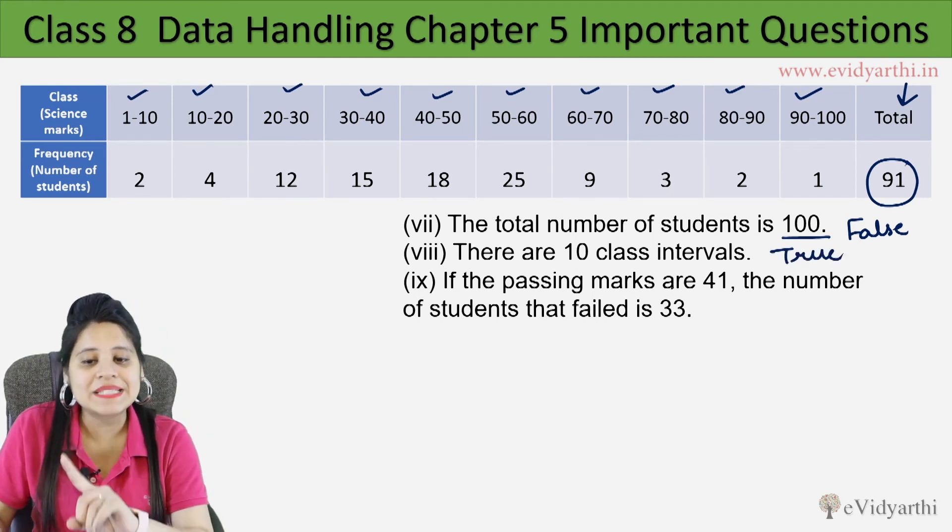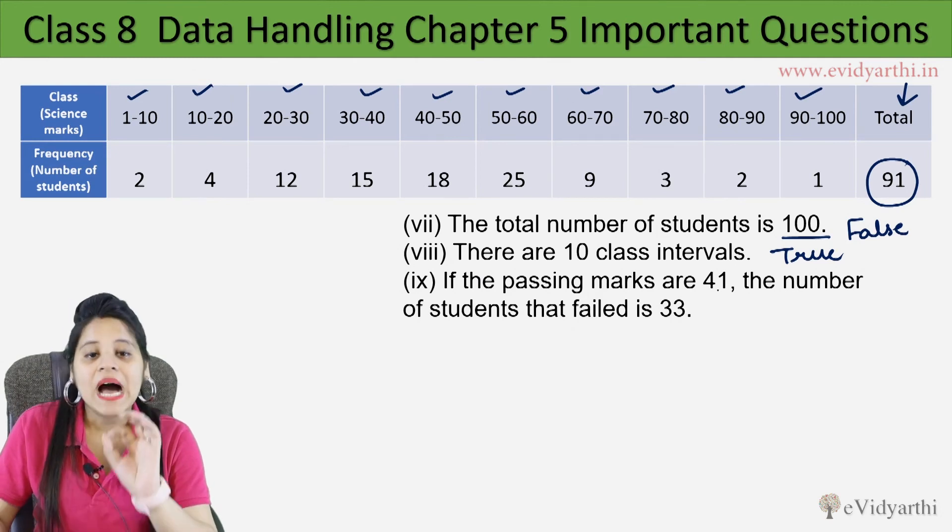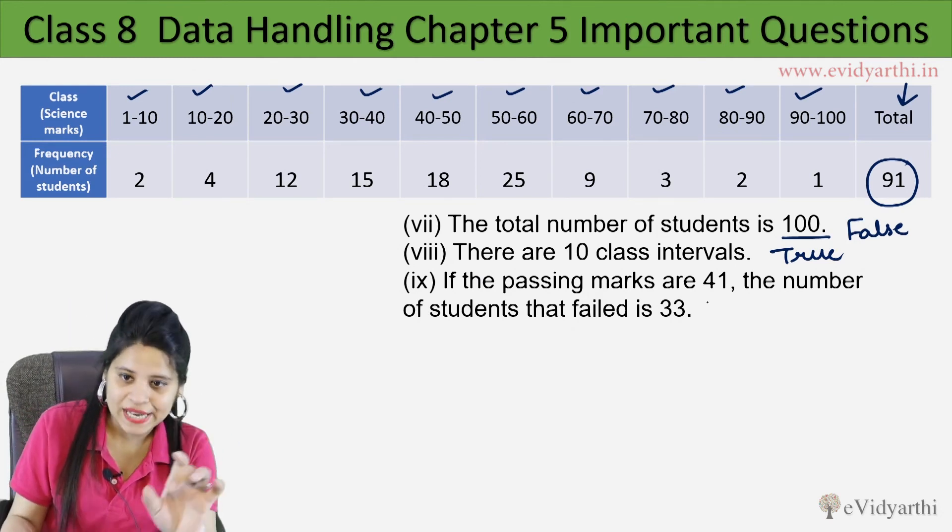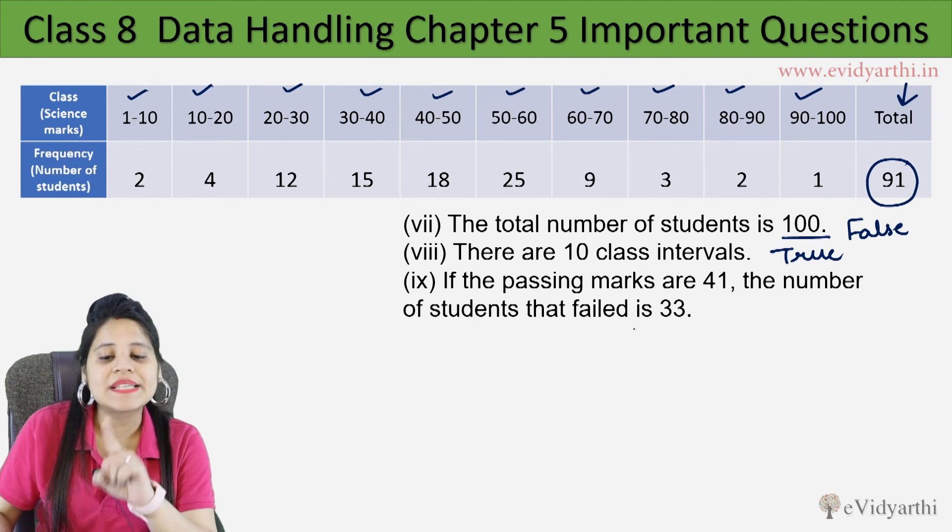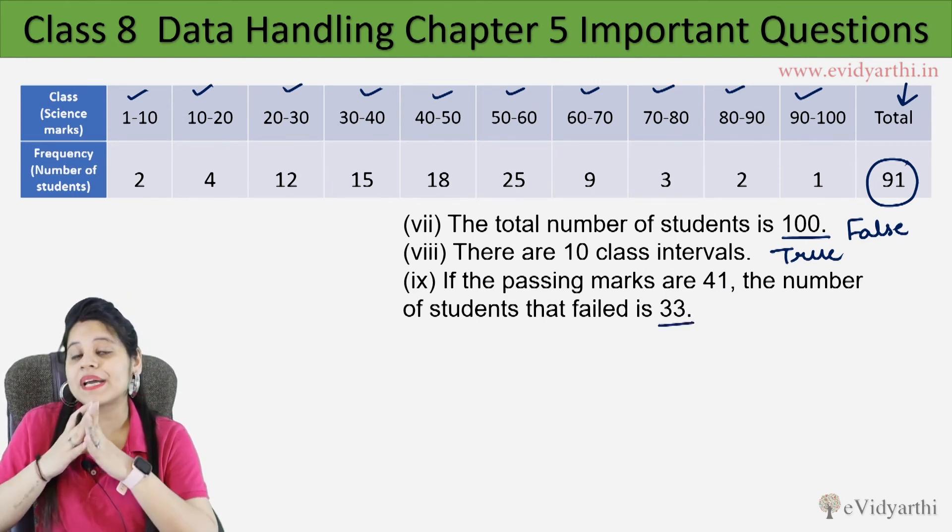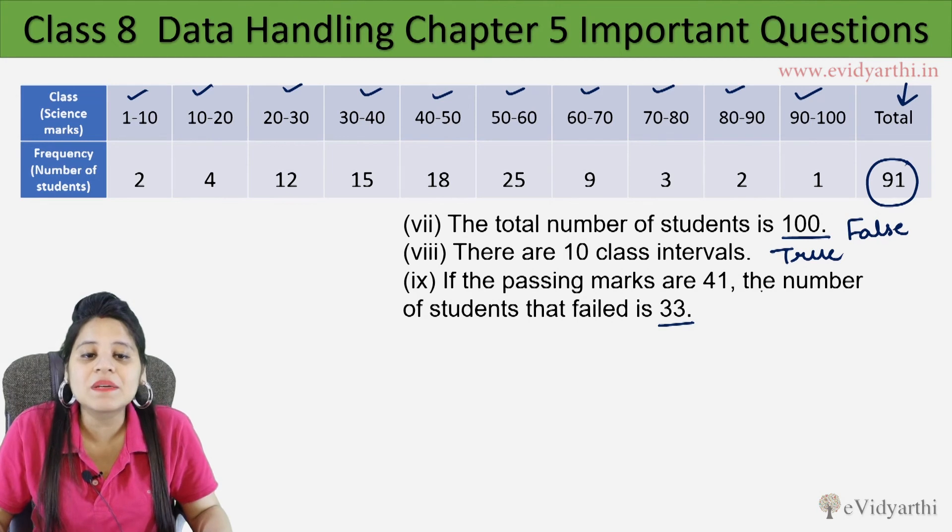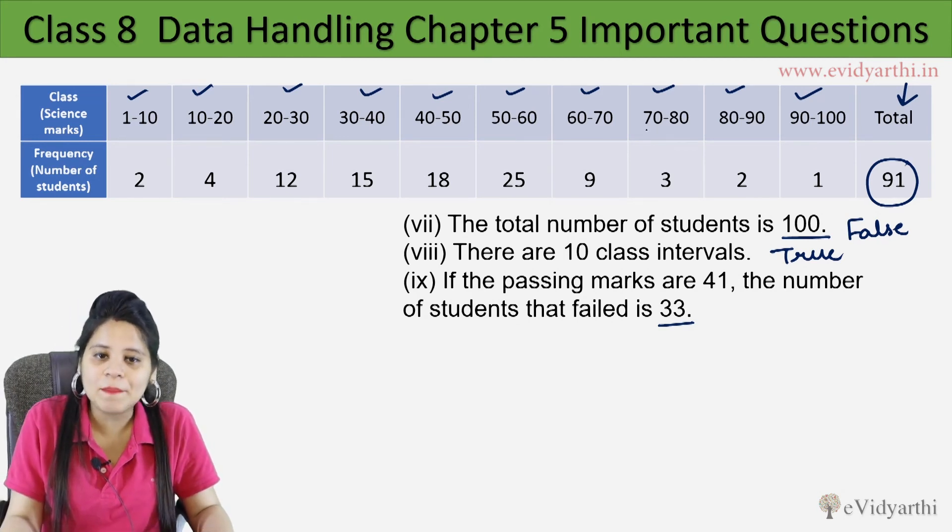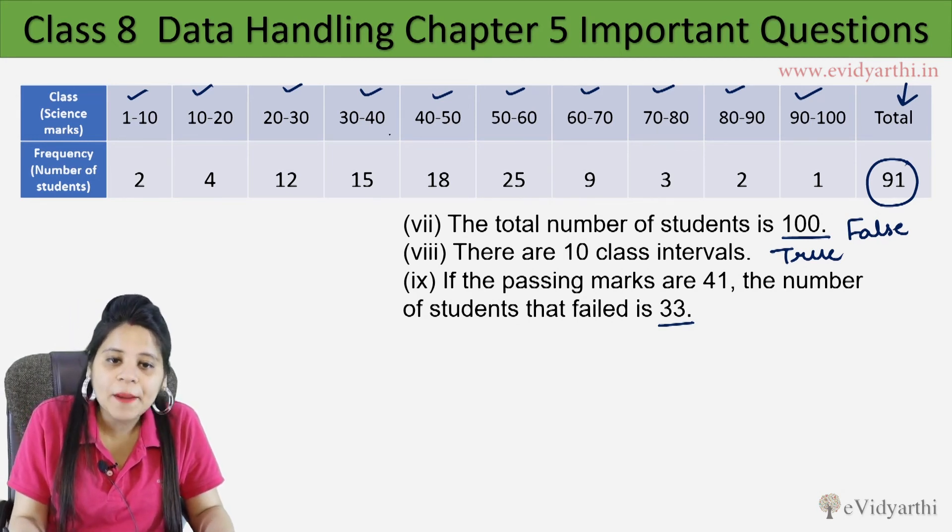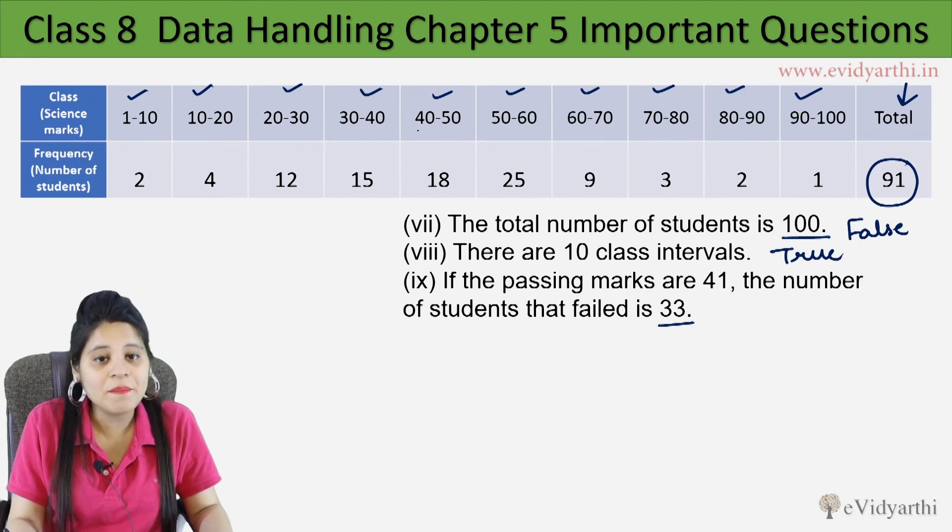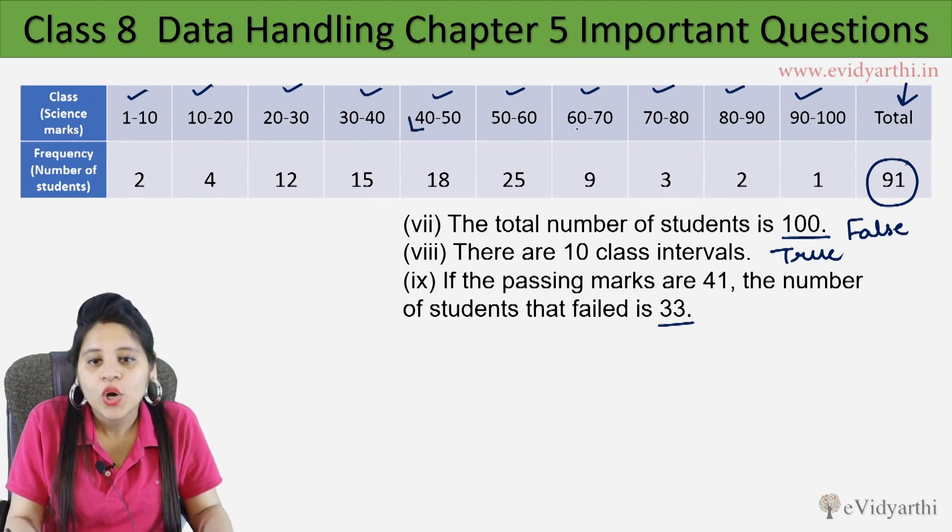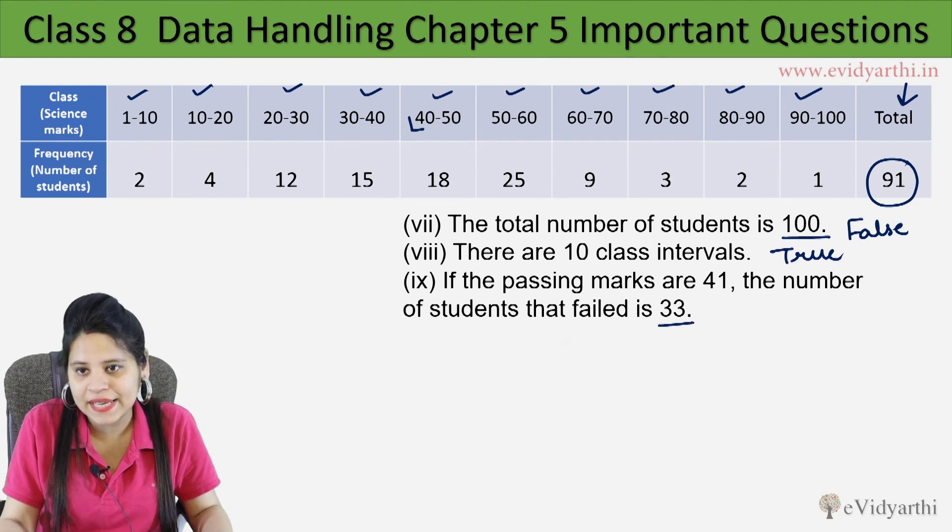Then if the passing marks are 41, the number of students that failed is 30. Now we need to calculate this. If passing marks is 41, so we keep these marks. So here is 41 passing marks, meaning here the number of students that failed is 30. Now we have to calculate this.